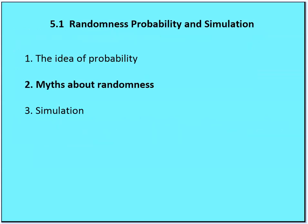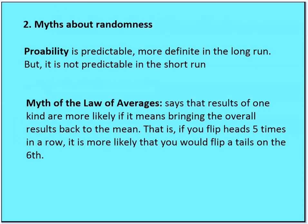Now let's talk about myths about randomness. Probability is predictable in the long run — we can make a statement about how, with a certain set of coin tosses, what the likelihood is of getting a certain number. But it's not predictable in the short run, meaning we can't say definitively that if you toss a coin 10 times, five of those times it's going to come up heads.